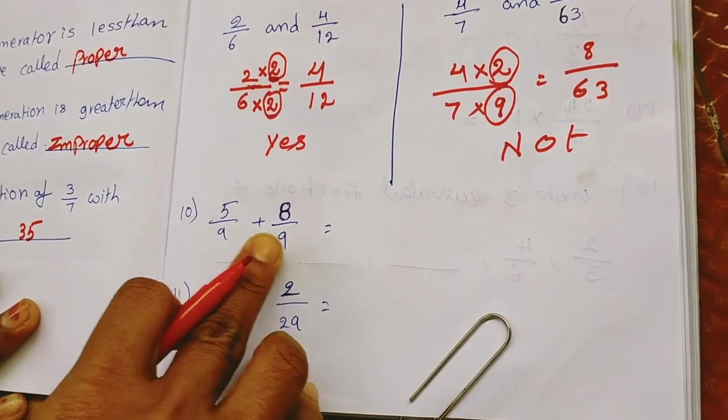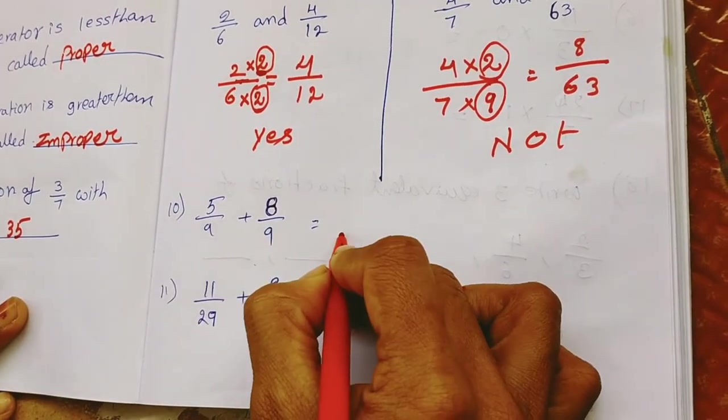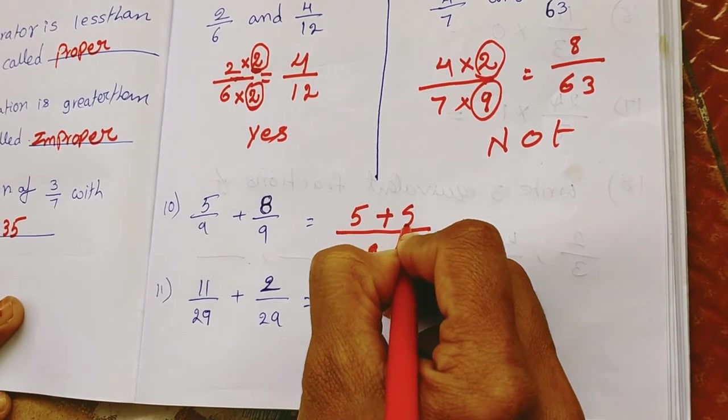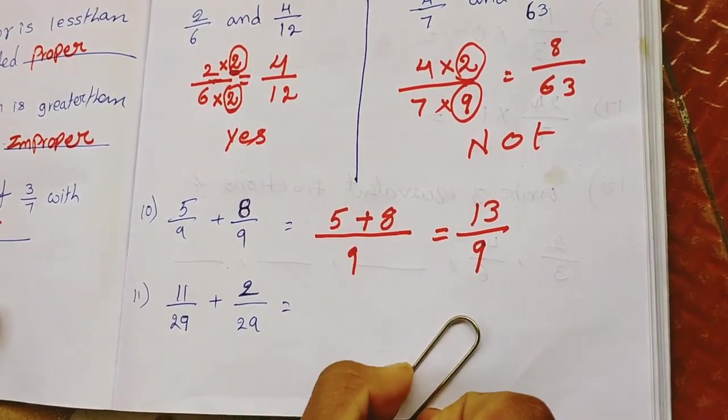Here first look at the denominator. Denominator is same here, here also 9 and here also 9. So here we take 9 and in above part 5 plus 8. So what is 5 plus 8 is 13 by 9.